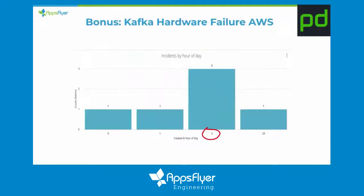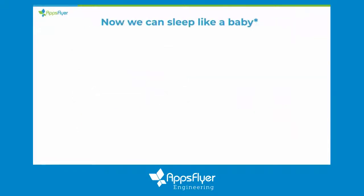AWS hardware failures always happen at 3 AM of course. By the way, it was one person who received all three of them on different nights. But now we can sleep like a baby — much better than before.